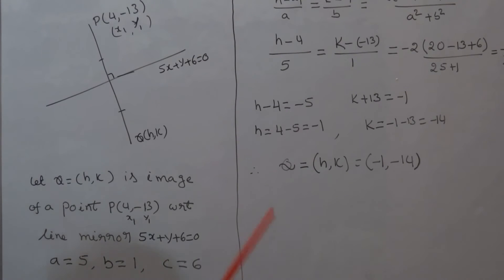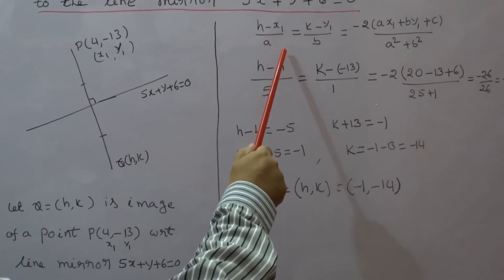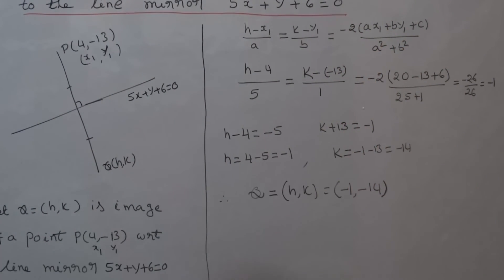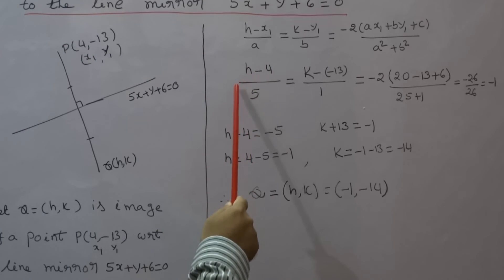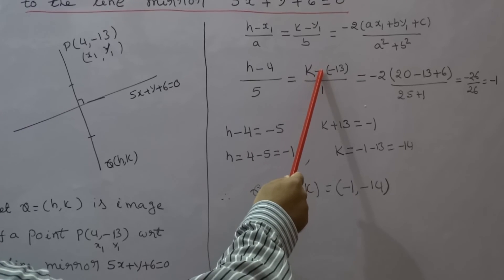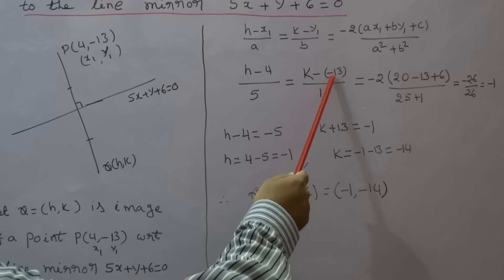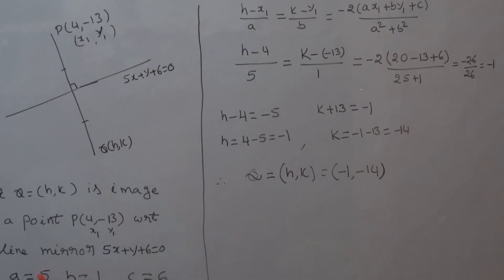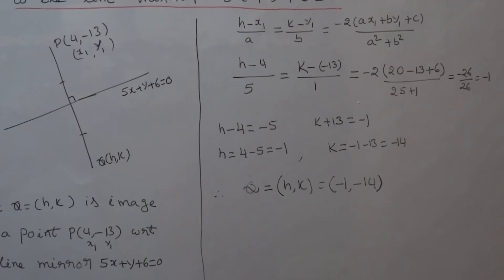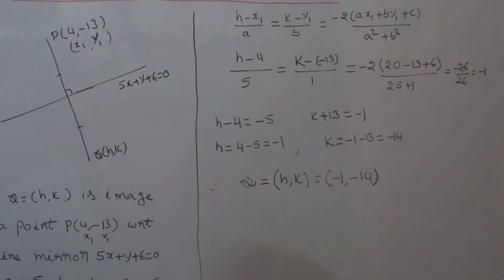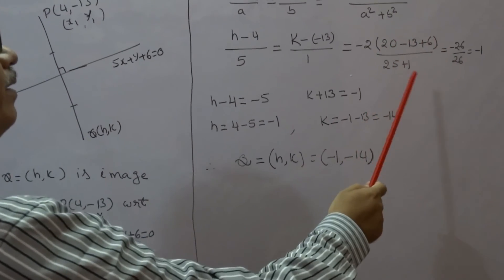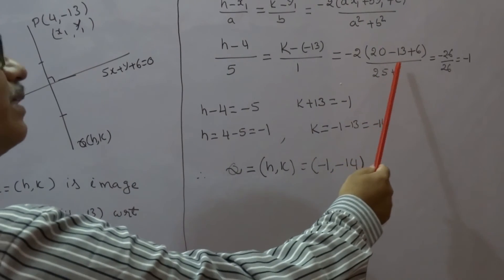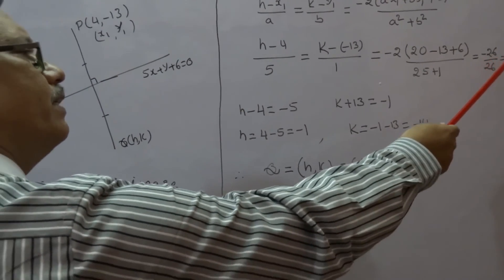Using the image theorem, (h - x1)/a = (k - y1)/b = -2(ax1 + by1 + c)/(a² + b²). Substituting: (h - 4)/5 = (k - (-13))/1 = -2(5×4 + 1×(-13) + 6)/(25 + 1) = -2(20 - 13 + 6)/26 = -2(13)/26 = -26/26 = -1.